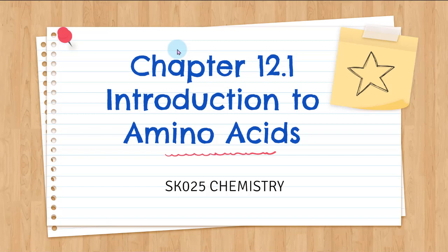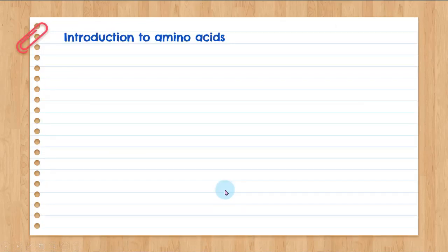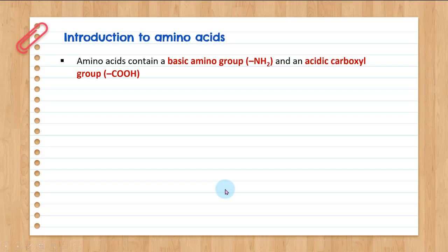Hello everyone, welcome to the video on Chapter 12.1 Introduction to Amino Acid, SK025 Chemistry. For amino acid, it contains a basic amino group NH2 and an acidic carboxyl group COOH on the same structure.